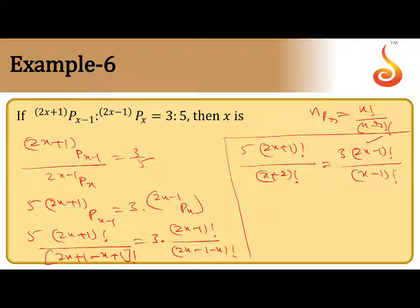Now among these two, which is greater? 2x plus 1 is greater. Keep 2x minus 1 factorial as it is and split 2x plus 1. Split as 2x plus 1, 2x, and 2x minus 1 factorial. Now x plus 2 factorial becomes x plus 2, x plus 1, x, and x minus 1 factorial. Stop whenever you get x minus 1.